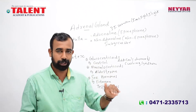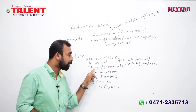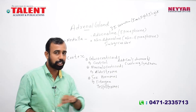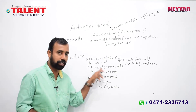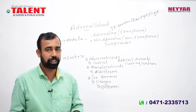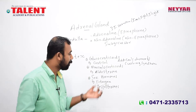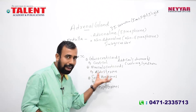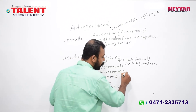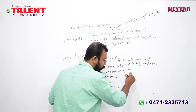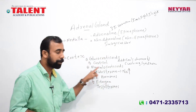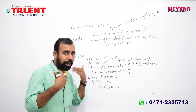In water and electrolyte balance, mineralocorticoids play a key role. An example is aldosterone. In our body, it promotes the reabsorption of sodium ions — that is why it is called the recto-sumarth or salt-retaining hormone.